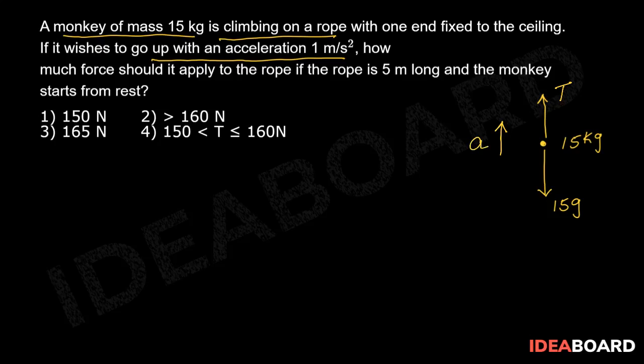So from the FBD, we can write 15A = T - 15g. And according to the problem, A is given as 1 m per second square. So substituting that value, we can write T = 165N.